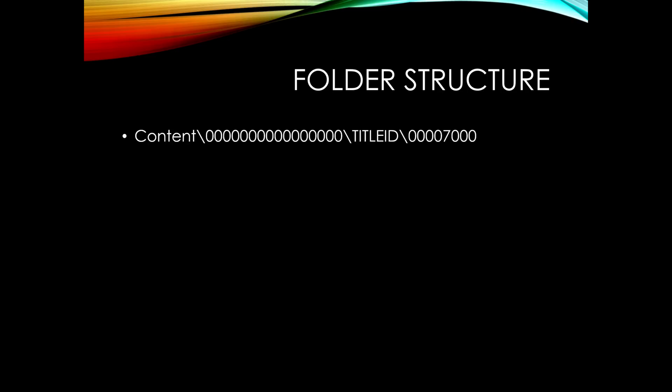Within that folder, your game is actually stored in another folder that has four zeros, then seven, then three zeros — that's where your game is stored. DLC and other add-ons for that game will have a different folder structure following the same naming convention, similar to the four zeros, the one seven, and the three zeros, which we will cover in future videos.